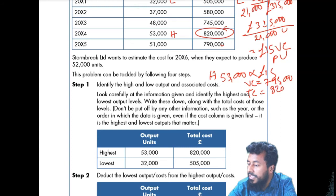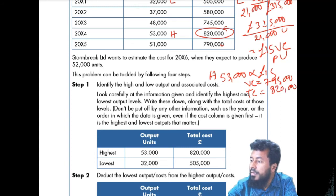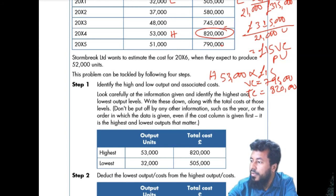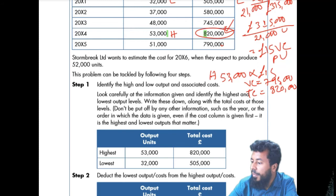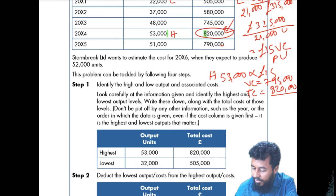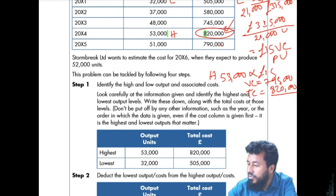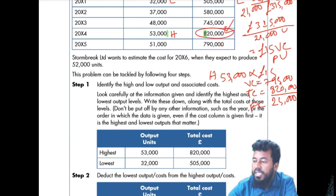The total cost is 820,000. The variable cost is 795,000. Getting the difference — 820,000 minus 795,000 — gives 25,000, which should be your fixed cost. So the fixed cost is 25,000. I have used the highest activity level here, which is 2014.